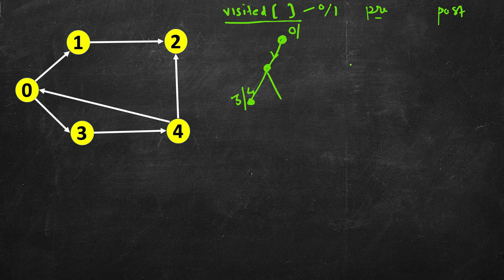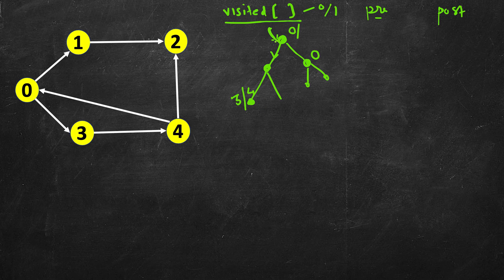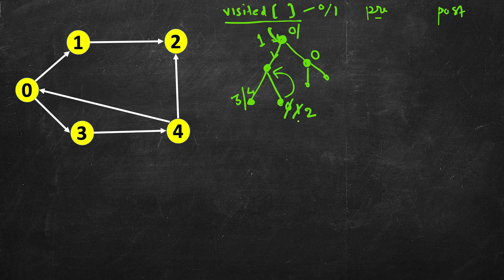These pre/post times denote states. Nodes we haven't visited yet start at state 0 (unlisted). When we first reach a node, we give it state 1. While exploring it, the state remains 1. Once we backtrack and it's completely explored, we change its state to 2.